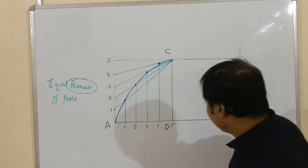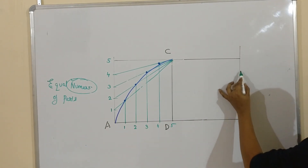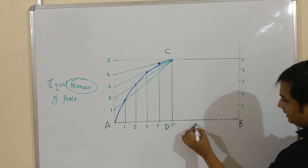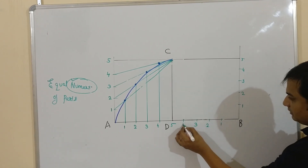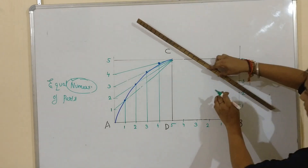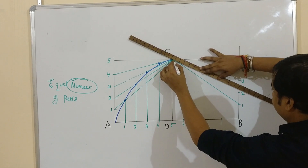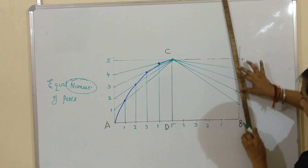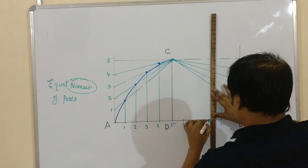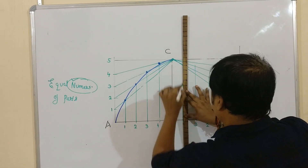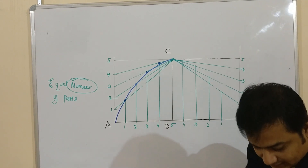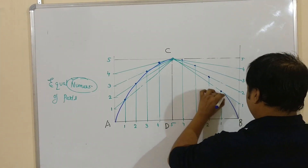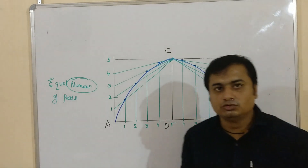Repeating the same procedure means dividing the other horizontal line into 5 equal parts numbered 5, 4, 3, 2, 1 in the appropriate order, and the vertical line similarly. Then join the vertical points to C, drop verticals from the horizontal points, and mark the intersection points. Once you join these points, you will automatically get a smooth parabola on the other half as well.